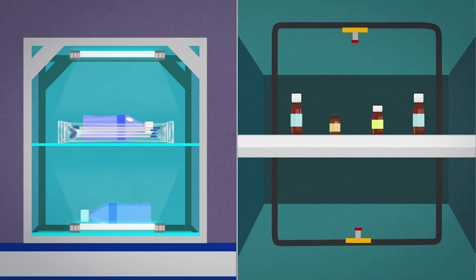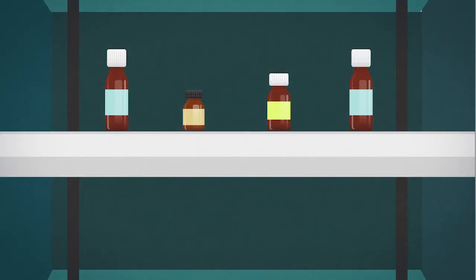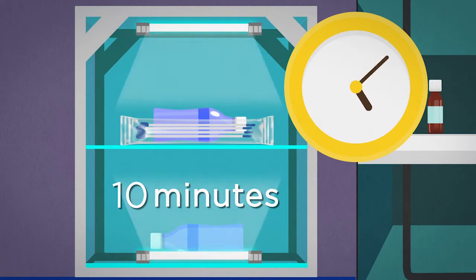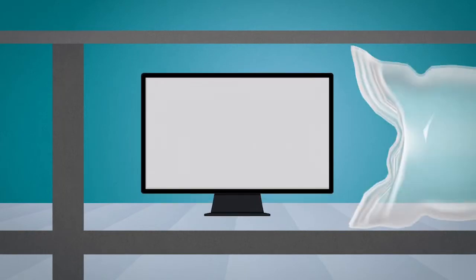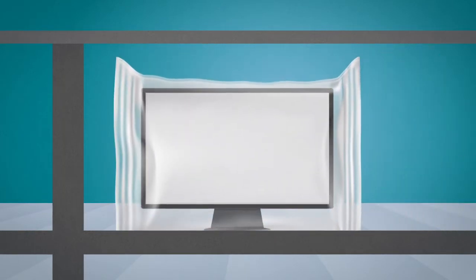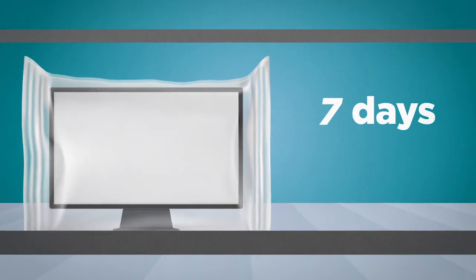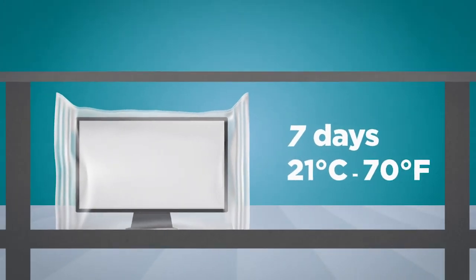If the decontamination method is disinfection, fogging or spraying, supplies must remain in contact with the disinfectant for a minimum of one hour. Decontamination from UV lights requires 10 minutes minimum UV contact time. Electronic items should be kept in a plastic container for a minimum period of 7 days at room temperature, 21 degrees Celsius or 70 degrees Fahrenheit, before unpacking and entering the farm.